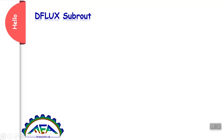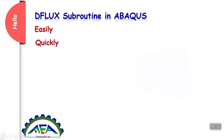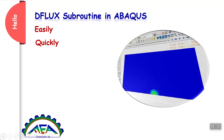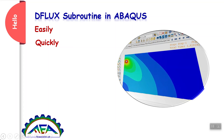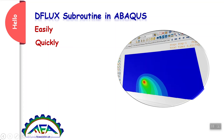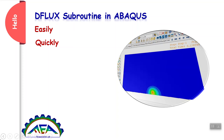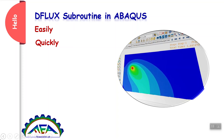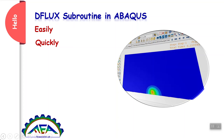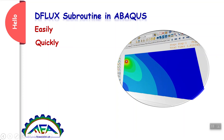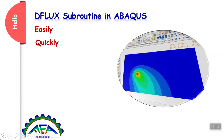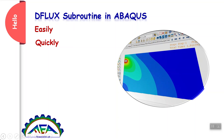Hello. You want to learn the DFLUX subroutine in Abaqus easily and quickly? DFLUX is a subroutine to define heat flux in heat transfer problems and mass flux in mass diffusion problems. In other words, if you want to have a movable heat source like a laser, or model moving objects like carbon atom diffusion, you need to define a DFLUX subroutine.